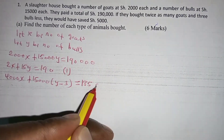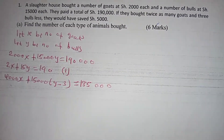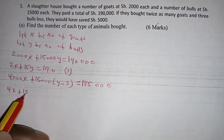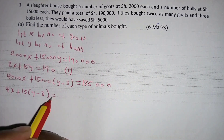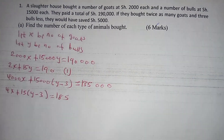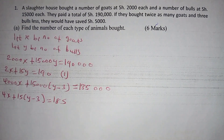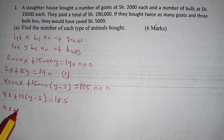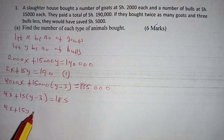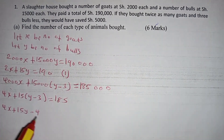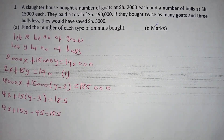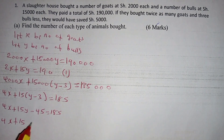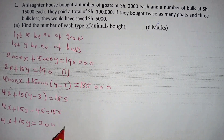The total amount spent would be 190,000 minus 5,000, which equals 185,000. Dividing by one thousand gives: 4x + 15(y − 3) = 185. Expanding: 4x + 15y − 45 = 185, so 4x + 15y = 230. We call this equation two.